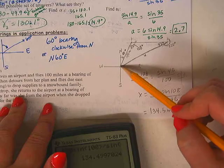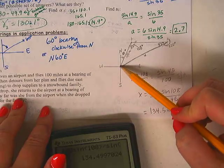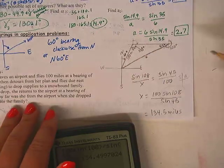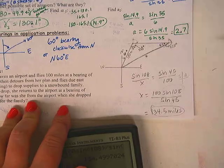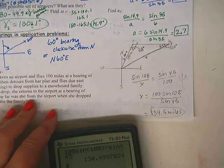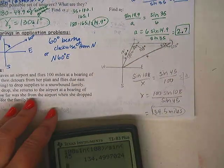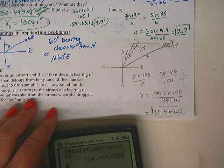So now let's think about this. If this was 100 miles and we don't know how far that is, but it doesn't matter, does it make sense that it would be 134 miles back this way? Yeah, I think that will work. We're done.